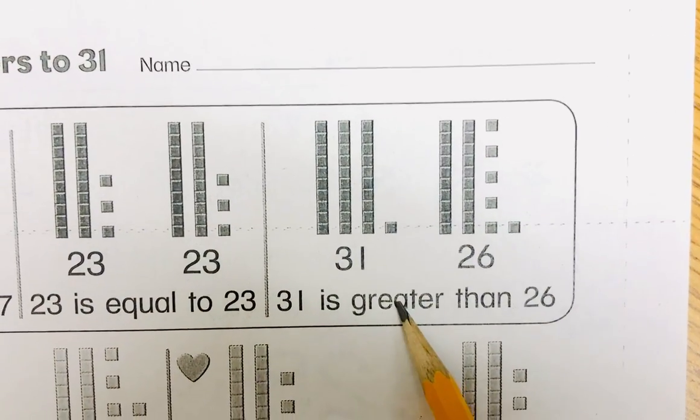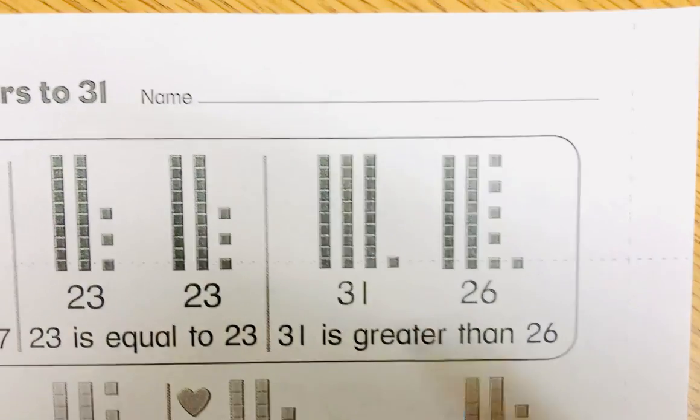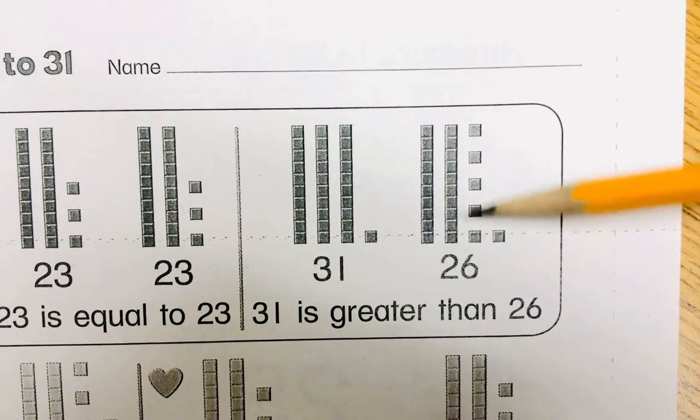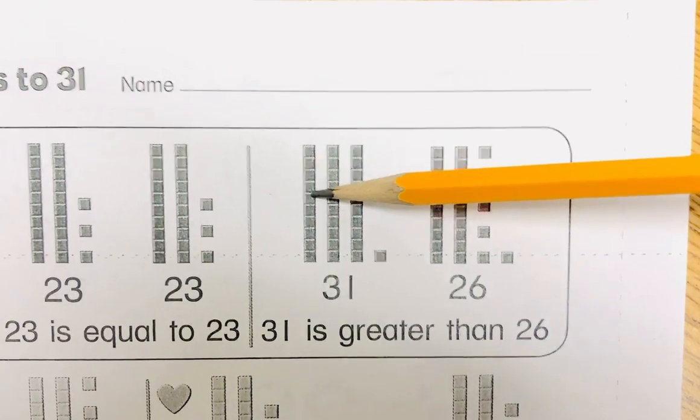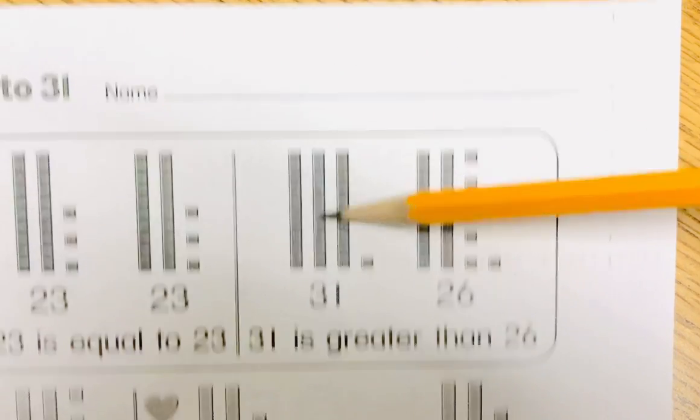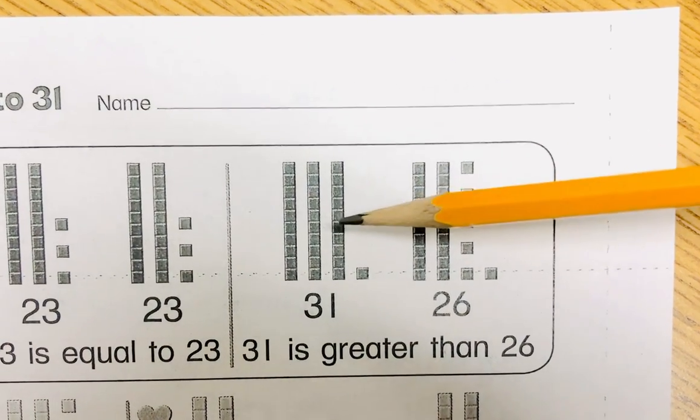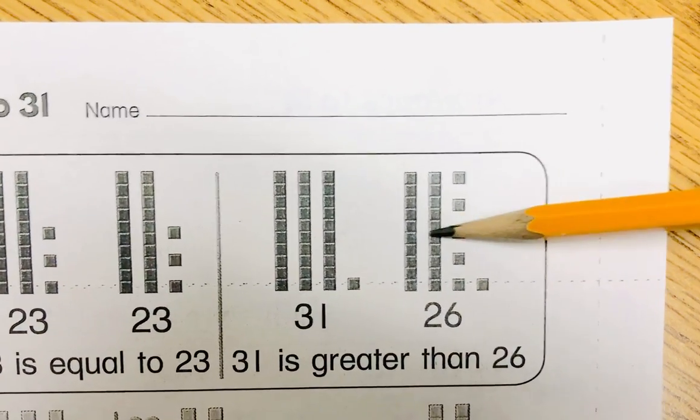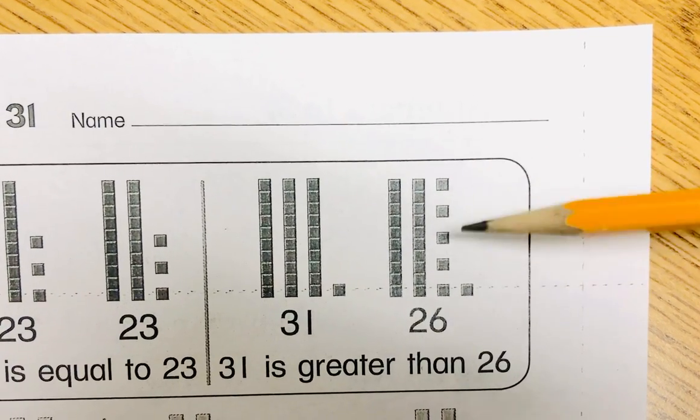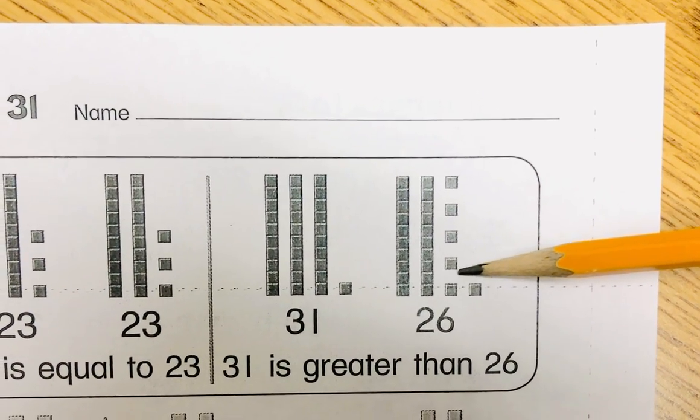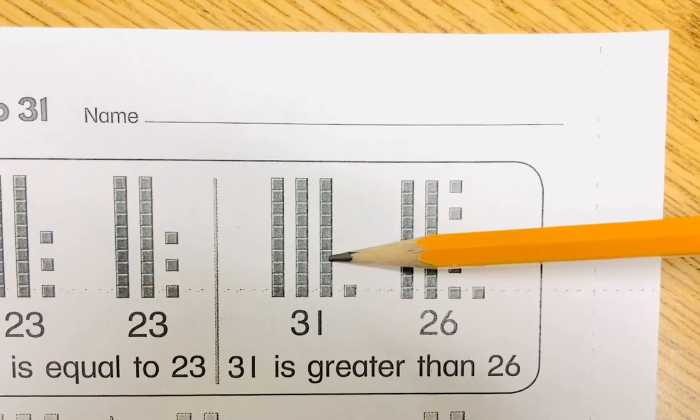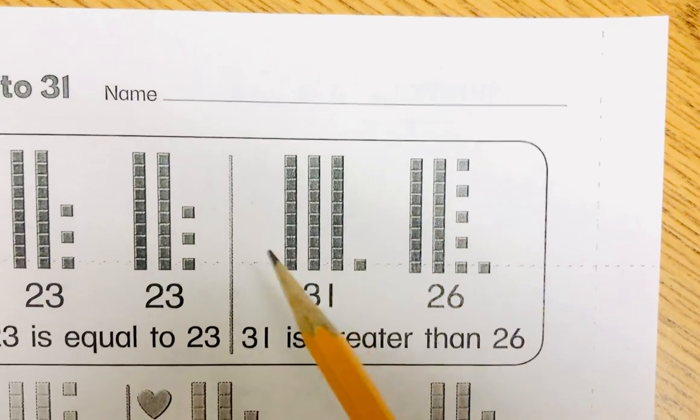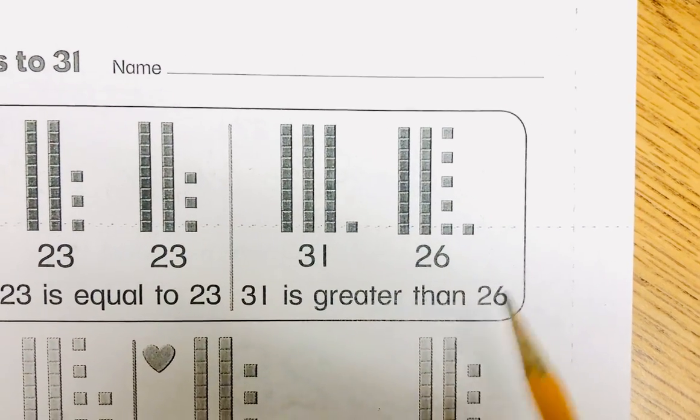Now 31 is greater than 26. Look at, now don't get confused. Remember we talked about this in class. Don't think, wow, look at all these little ones. Because you have one group of 10, one group of 10, two groups of 10, two groups of 10. Three, this 31 has three groups of 10. Where 26 only has two. So even though it has all these little ones, it's still less than a whole group. Three groups of 10. This only has, 26 only has two groups. So 31 is greater than 26.